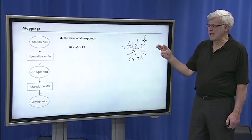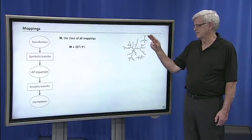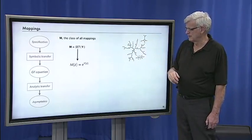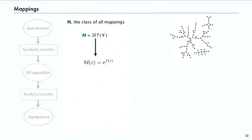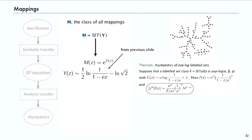And now we want the class of all mappings. Mapping is a set of cycles of trees. So that's e^Y(z). Y(z), on the previous slide, we show that Y(z) is asymptotic to ½log(1/(1-ez)) - log√2. So now we have e to the log. That's X^log.